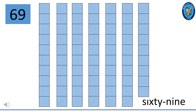This is 69. 6 and 9 make 69. 69 is made up of 6 ten-squared blocks and 9 squares. That also means that 60 plus 9 is 69. Can you see the number name at the bottom right of your screen?